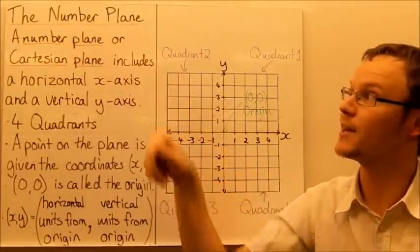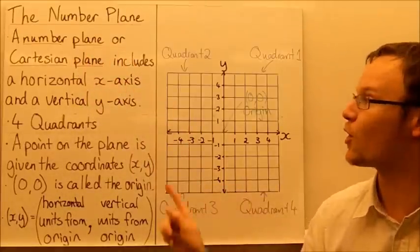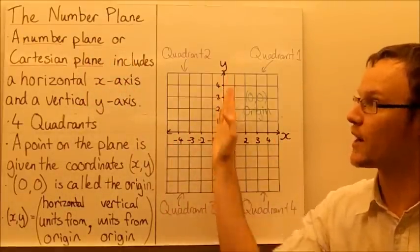Today we're going to talk about the number plane. So a number plane, or a Cartesian plane, includes a horizontal x-axis and a vertical y-axis.